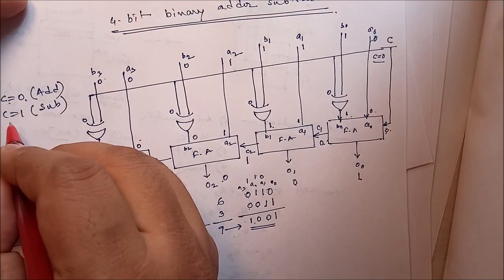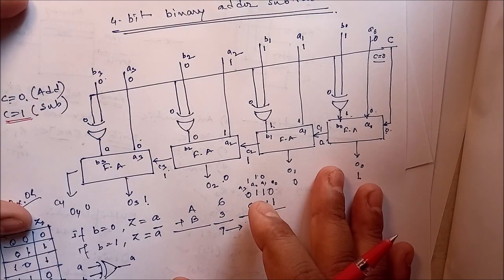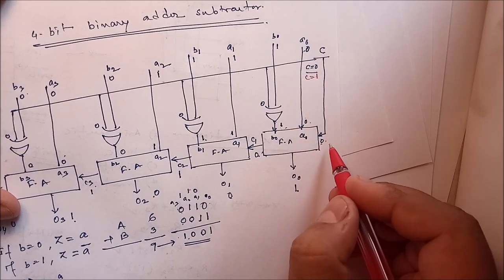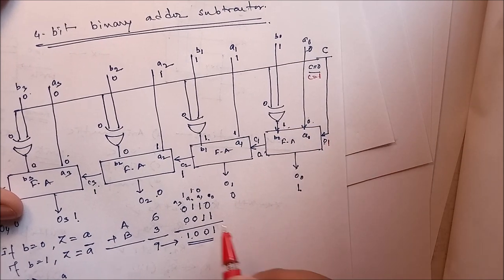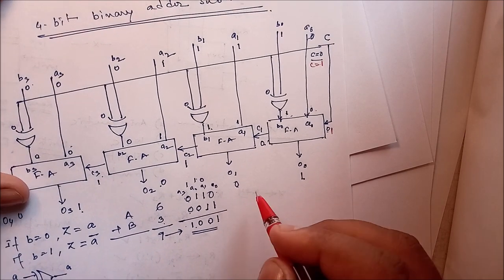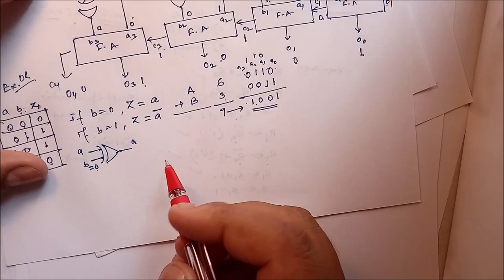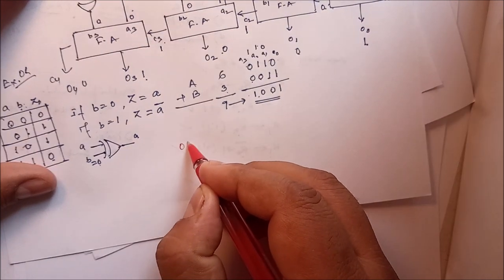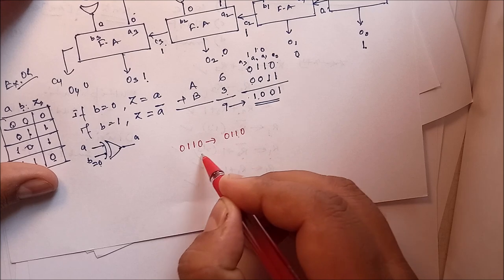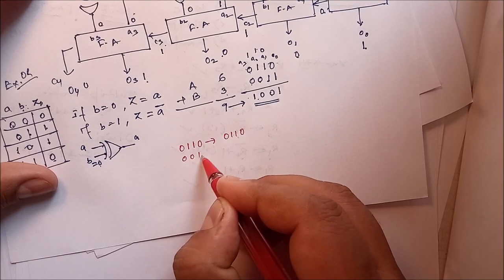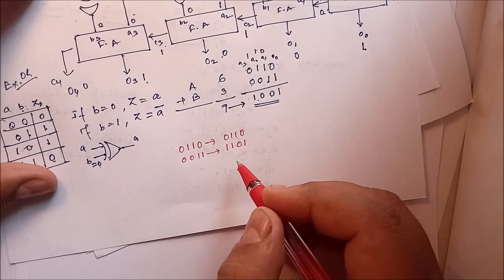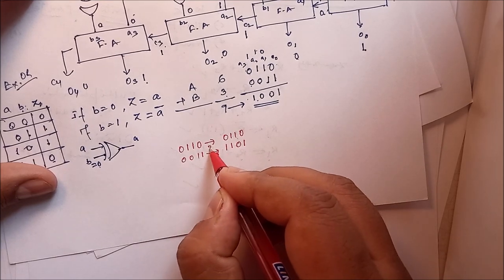Now, if c is equal to 1, we want to perform subtraction: 6 minus 3. Here we have to use 2's complement. A is 0110 (which is 6). The 2's complement of 0011 (which is 3) is 1011. So the XOR control input is 1, meaning all b inputs are complemented.